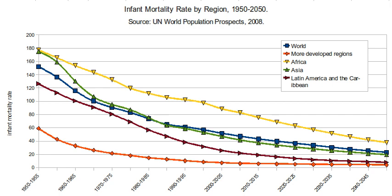Birth spacing is the time between births. Births spaced at least three years apart from one another are associated with the lowest rate of mortality. The longer the interval between births, the lower the risk for birthing complications, and infant, childhood, and maternal mortality. Higher rates of pre-term births and low birth weight are associated with birth-to-conception intervals of less than six months. Shorter intervals between births increase the chances of chronic and general undernutrition. 57% of women in 55 developing countries reported birth spaces shorter than three years, and 26% report birth spacing of less than two years.